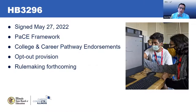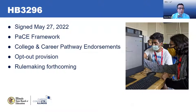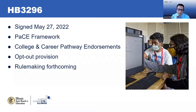HB 3296 only addresses two of those four areas of the original PWR Act — the PACE framework and the career pathway endorsements. The PWR Act was passed unanimously through the General Assembly, with members of both parties supporting it back in 2016, and it was signed into law by Governor Rauner. It's critical to understand that the majority of the elements of the act were not requirements for local education agencies — they were requirements for the Illinois State Board of Education and other agencies to begin implementing.